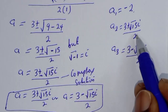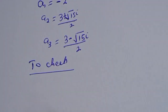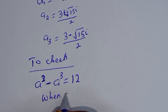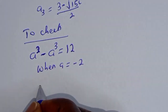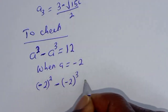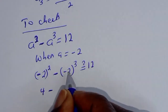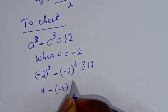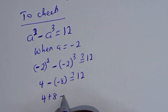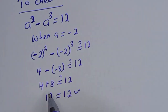Let's verify using the only real solution a equals minus 2. Substituting into a squared minus a cubed equals 12: (minus 2) squared minus (minus 2) cubed equals 4 minus (minus 8) equals 4 plus 8 equals 12, which equals 12. This confirms the answer is correct.